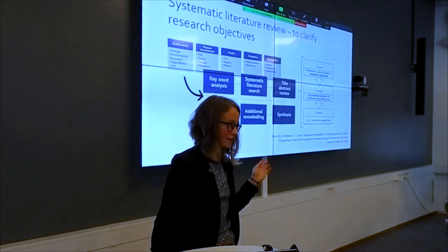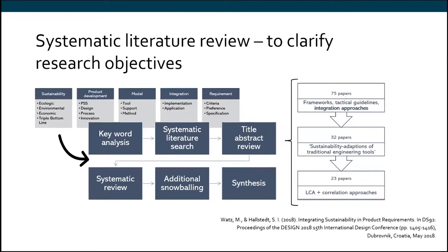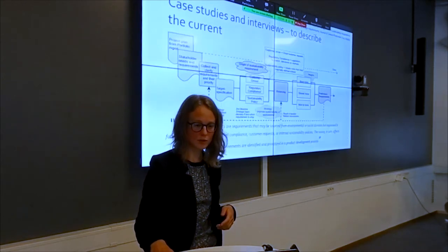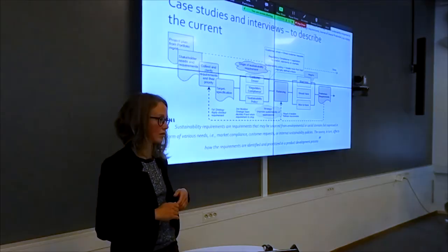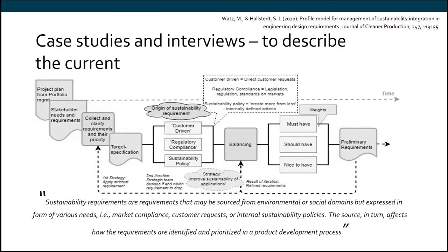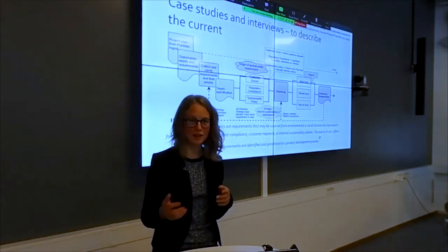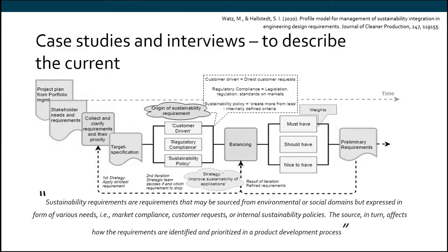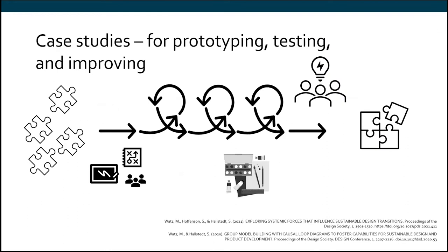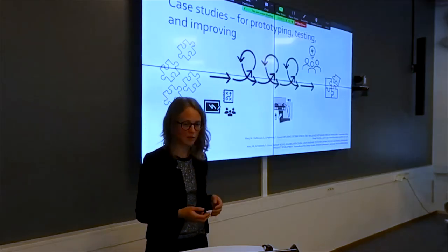At the beginning of a research project we tried to clarify the research objectives and the research gap, and systematic literature review can be very useful for that. We also wanted to describe the current state, and that is where the case studies and the companies in the project came in. We were able to identify how different companies within the project were working with integrating sustainability and requirements, and then use case studies to prototype the support in order to improve how companies can integrate things in their requirements.